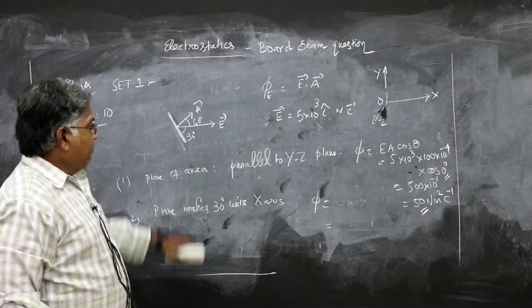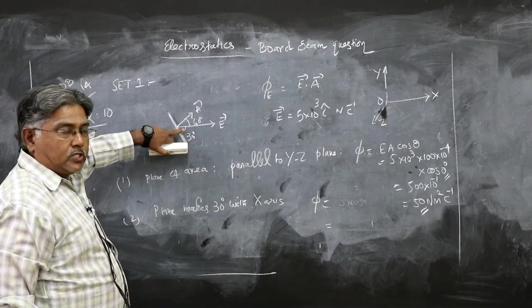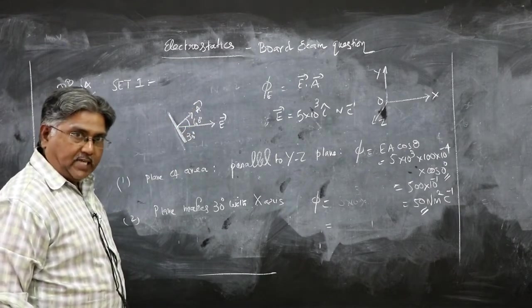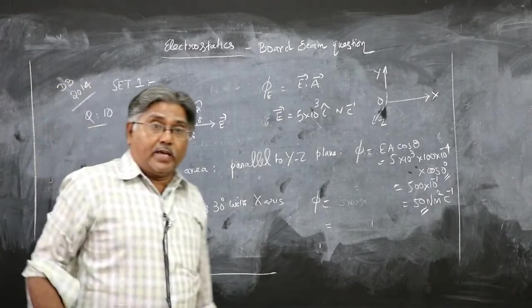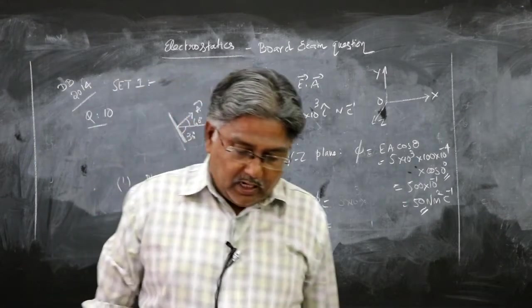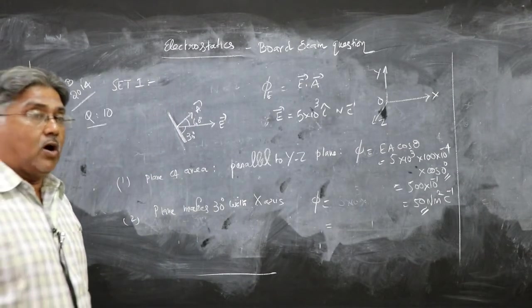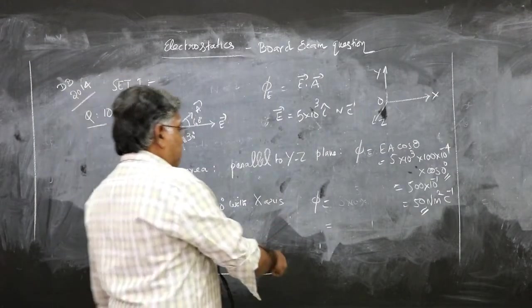This is the direction of electric field. The plane makes 30 degrees with the x-axis, so perpendicular will make 60 degrees with the x-axis. But the electric field is along the x-axis, so now the angle between the area vector and the electric field is 60 degrees, not 30. So you substitute here.